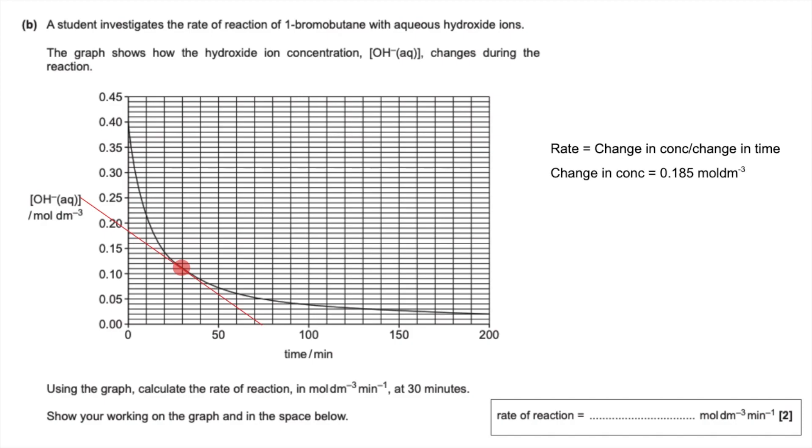The change in concentration I've got for the tangent I've drawn is roughly 0.185 moles per decimeter cubed, and the change in time is 73, 74 minutes. So the gradient is that divided by that, which comes out to three significant figures as 0.00253.